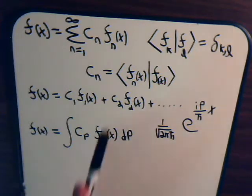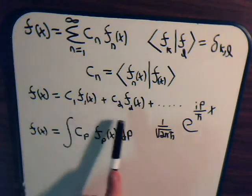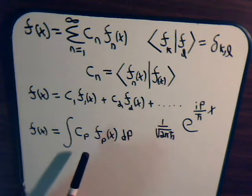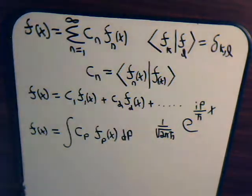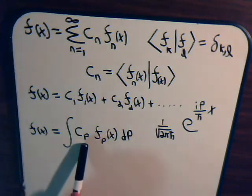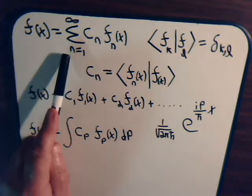In this situation the n's just take on discrete values, so f of x is equal to n of 1, n of 2, etc. Then we said: suppose we have this situation where we have some functions that are complete, but the variables — in this case p instead of n — don't just take on values 1, 2, 3, and so forth, but they take on a whole continuous set of values. If these are complete you can still get another function f of x, but since these are now continuous we have to do it by integrating, not just by summing.